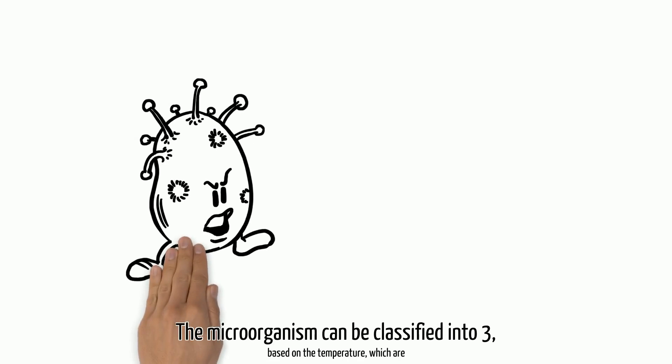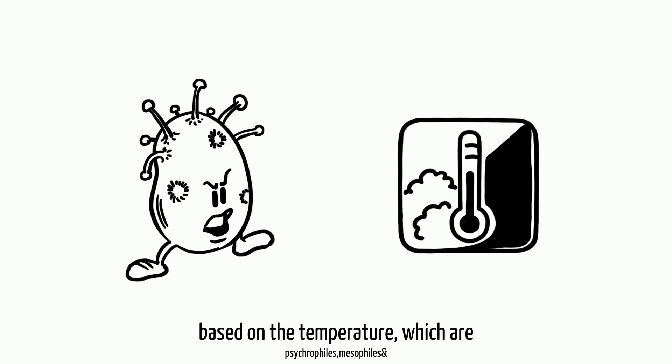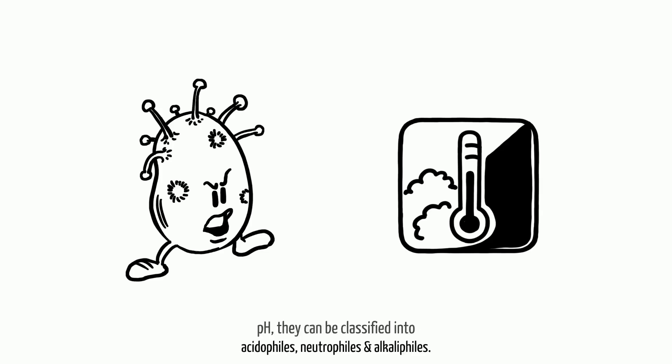Microorganisms can be classified into three groups based on temperature: psychrophiles, mesophiles, and thermophiles. Based on pH, they can be classified into acidophiles, neutrophiles, and alkaliphiles.